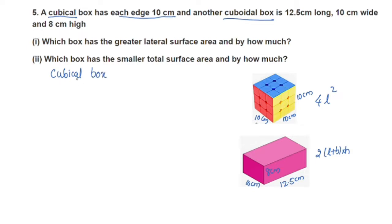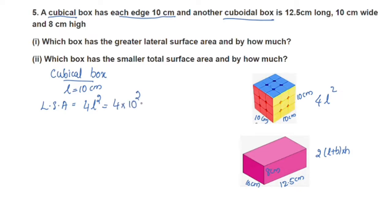The cubical box has edge 10 cm. The lateral surface area (LSA) is equal to 4l². With l equal to 10, we get 10 squared equals 100, so LSA equals 4 × 100 = 400 cm². The lateral surface area of the cubical box is 400 cm².